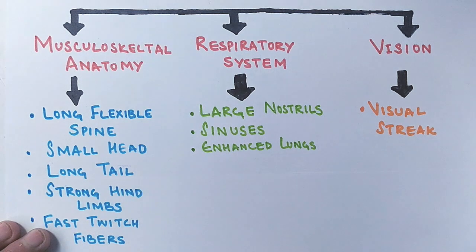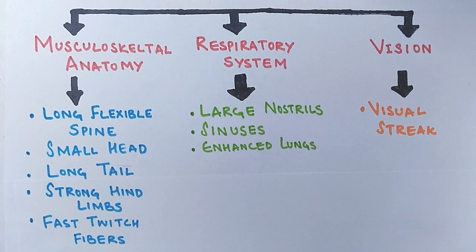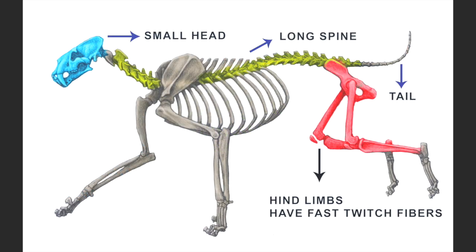The final modification comes from its vision, in the form of the visual streak. The cheetah's eyes have a high concentration of nerve cells arranged in a band at the center of the eyes. Due to this physiological modification called the visual streak, the cheetah is able to keep focus on its prey while sprinting at high speeds. In this diagram you can see all the modified structures — small head, long spine, tail, and hind limbs embedded with fast twitch fibers.